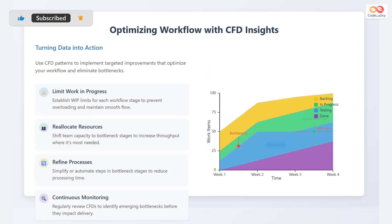Let's see how to optimize workflow with cumulative flow diagrams. Use CFD patterns to implement targeted improvements that optimize your workflow and eliminate bottlenecks. Establish work in progress, or WIP, limits for each workflow stage to prevent overloading and maintain smooth flow. Shift team capacity to bottleneck stages to increase throughput where it's most needed. Simplify or automate steps in bottleneck stages to reduce processing time. Regularly review CFDs to identify emerging bottlenecks before they impact delivery.